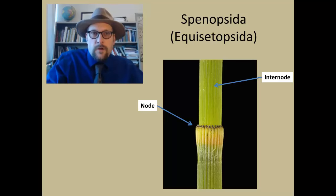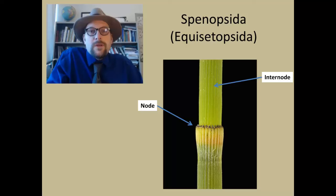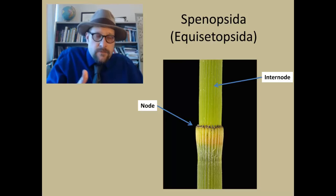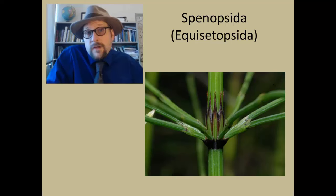Each segment is called an internode, with a node that fits into the next segment. This is a remarkable adaptation that allows the plant to easily break and regrow segments. This is an adaptation to herbivory, as animals that feed on horsetails would not completely uproot and kill the entire plant, but would allow for the upper portions to be sacrificed and later regrown after being browsed.